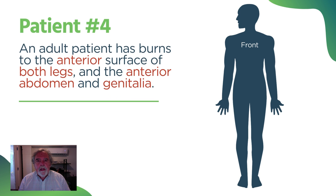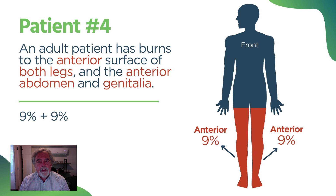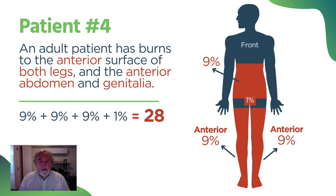Fourth and final case: an adult patient has burns to the anterior surface of both legs, the anterior abdomen, and the genitalia. The anterior surface of a leg is half a leg — that's 9% — but it's the anterior surface of both legs, so there are double qualifiers: anterior surface, two legs. That's nine plus nine, giving you 18%. The anterior abdomen is half of the front of the body, so that's another 9%, giving us 27%. Nine plus nine plus nine is 27%. And the genitalia is 1%, for a total of 28%.